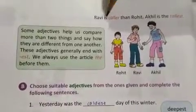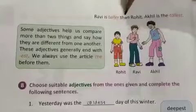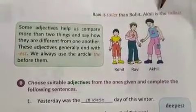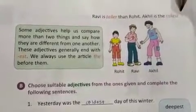Number 5: Ravi is taller than Rohi. Akhil is the tallest.